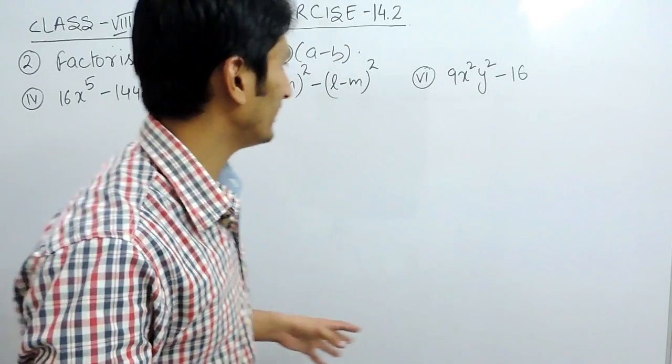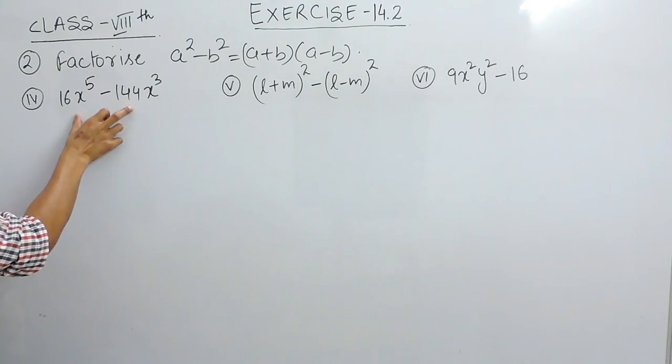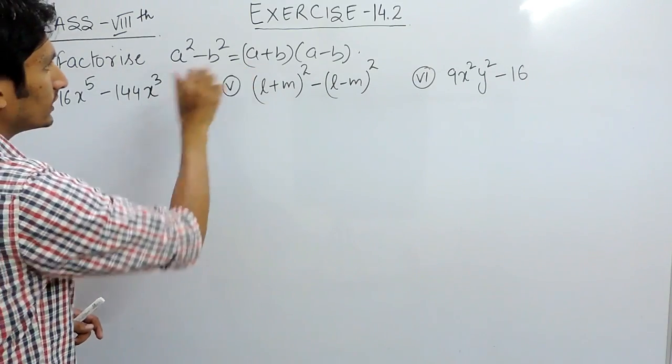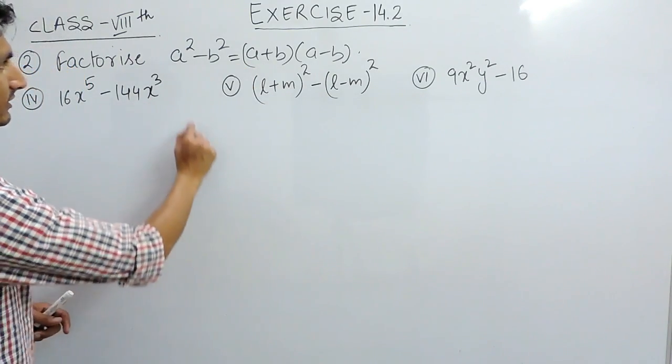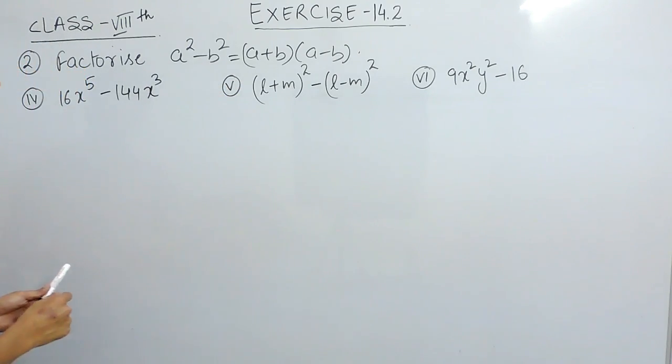Hello everyone, in this video we are going to solve parts 4, 5, and 6 of question number 2. Again, you have to factorize these expressions, and for factorizing we would use this particular identity: a² - b² = (a+b)(a-b).